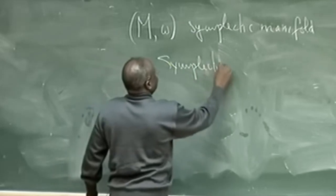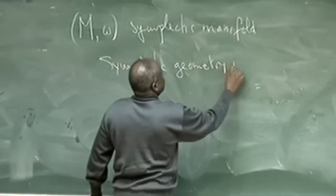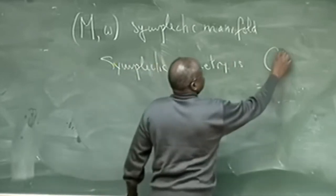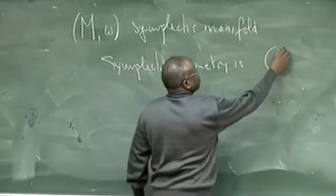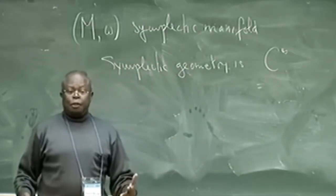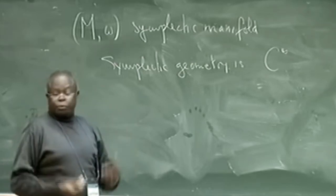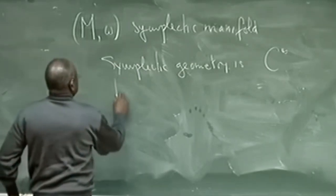Articles: Sur la structure des groupes de diffeomorphismes qui préservent une forme symplectique. Commentarié Mathematicae Helvetici 53, 1978, No. 2, 174-227.